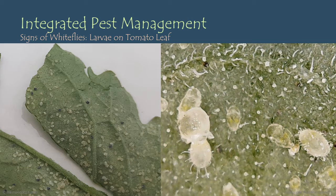Whitefly larvae typically appear on the underside of plant leaves. When inspecting your plants for pest problems, make sure you're turning over the leaves and inspecting the undersides, as most greenhouse pests reside there. Additionally, when spraying for pests in a greenhouse environment, coverage is key — turn the plant leaves over and ensure you're properly covering the bottom sides of the leaves with your sprays.